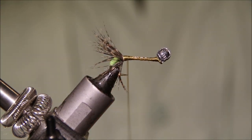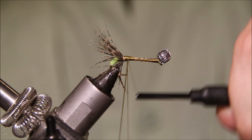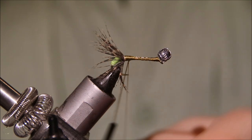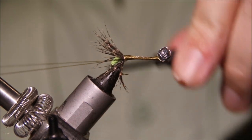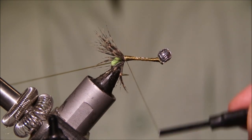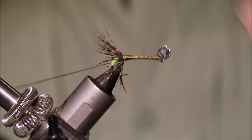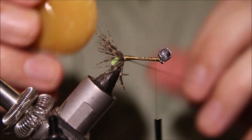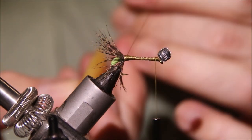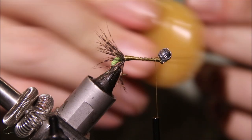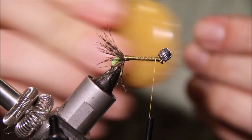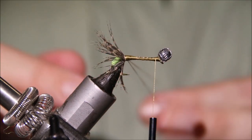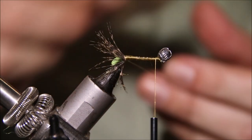I'm going to make a dubbing loop. A couple of turns, one around it to lock it. Then advance your thread up to the front. Now I always like to put a bit of wax on my dubbing loops—it just gives you a bit more grip when you're loading them.